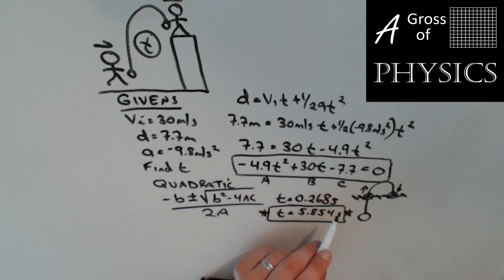Now if the fan stuck the glove out and the ball was traveling upward and they caught it as it was moving upward, we would have used the 0.268. But since it was the entire trip and the ball was on its way back down, we use 5.854 seconds.